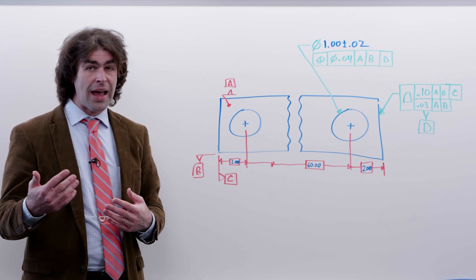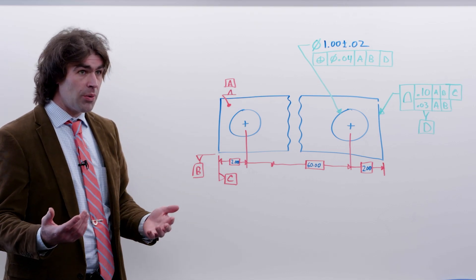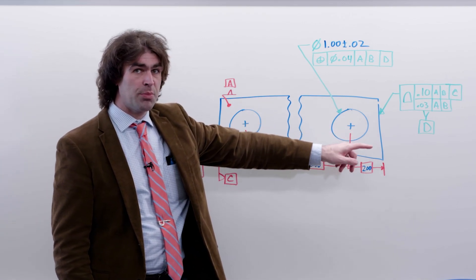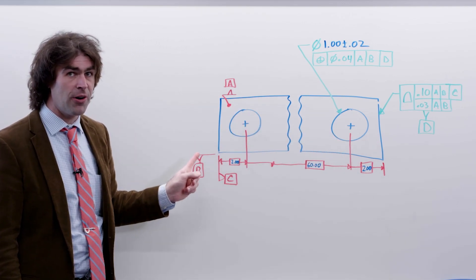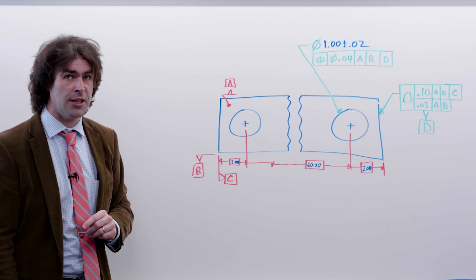You get additional tolerance here, which may or may not be bad, and it just depends how you're looking at it. So if it matters that the hole is close to this edge but doesn't matter how far it is away from this one, this is a perfect scheme.